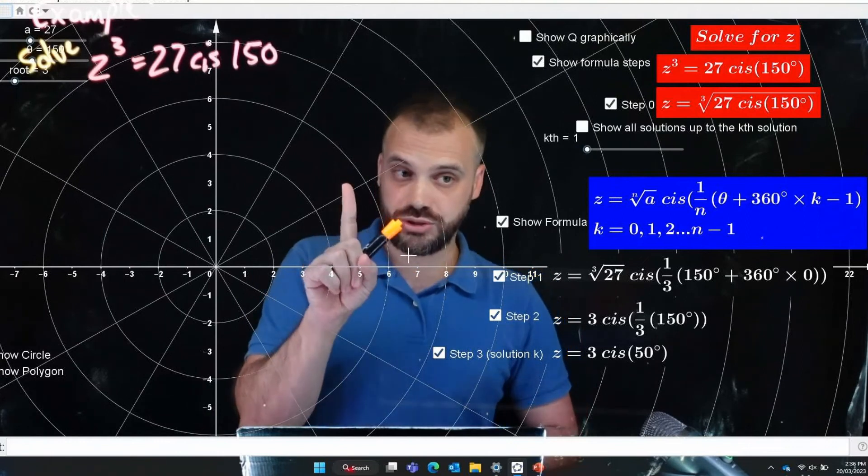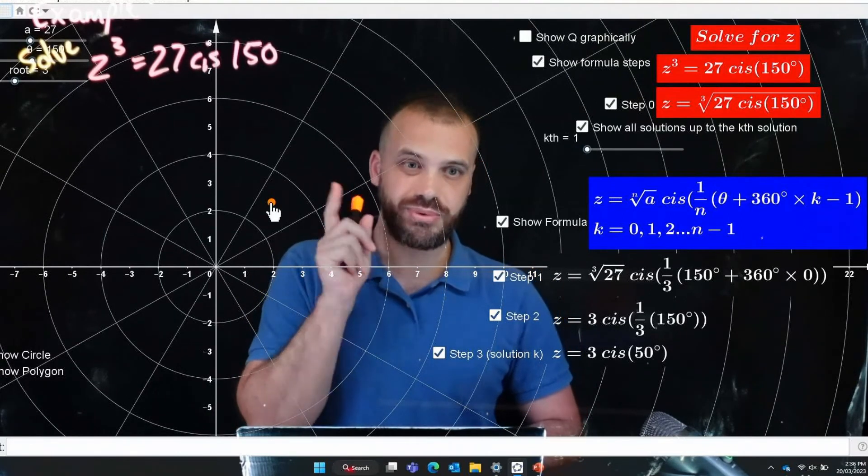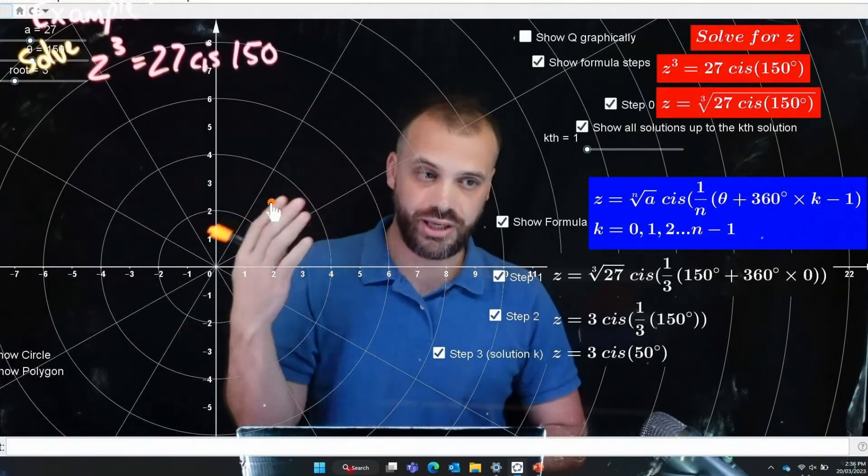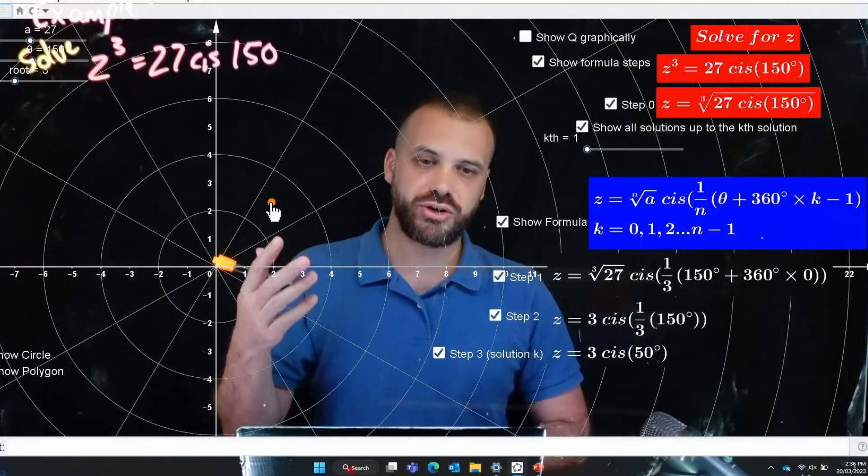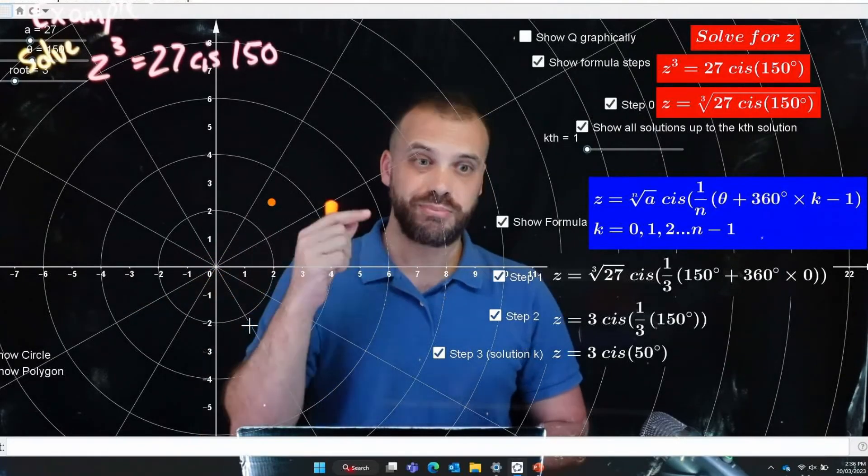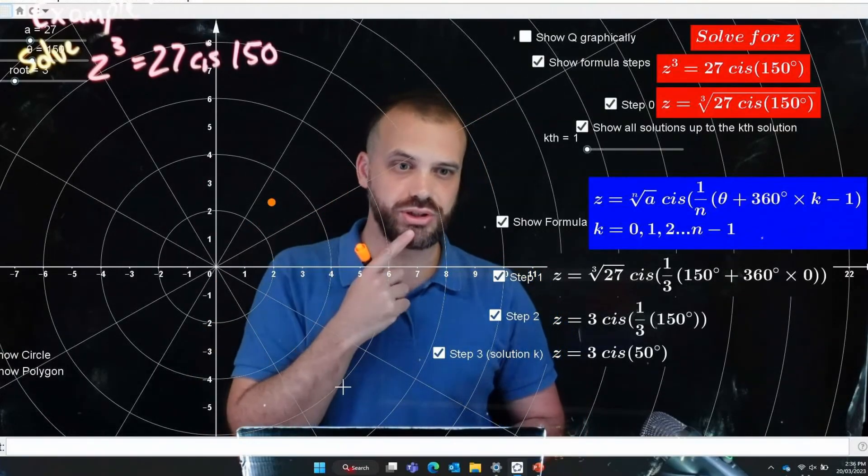Now that's one solution, I can show it to you on our argand diagram it's sitting right there and hopefully you're looking at that going oh great because it's really easy now, I know one of the solutions is going to be over here somewhere and I know one of the solutions is going to be over here somewhere because they're equally spaced around a circle, and if you're thinking that, good because that's what we want you to think.